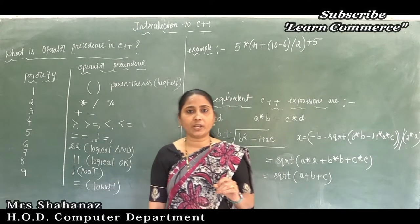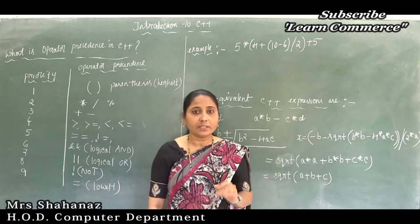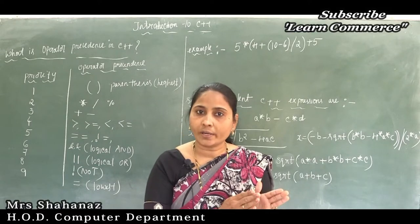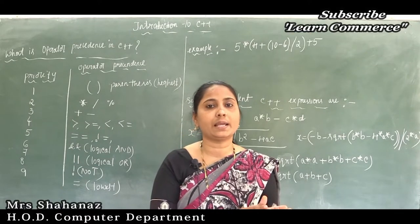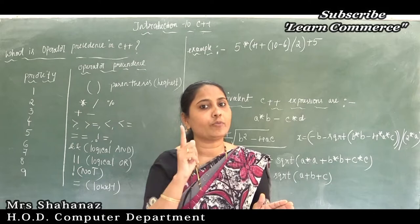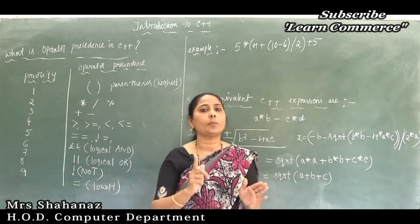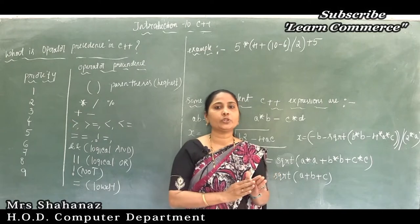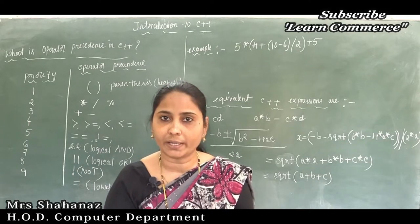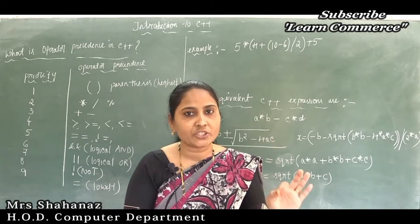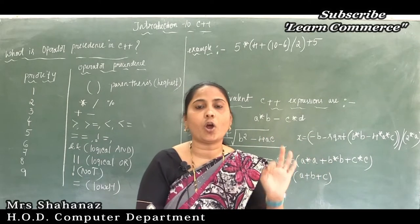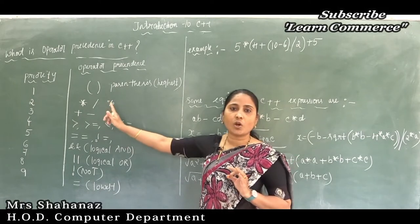If an expression contains multiple operators, the order in which the operations are carried out is called operator precedence. For example, in the expression x = 7 + 3 * 2, we first use the multiplication operator, then the addition operator. This order defines the precedence of operators.